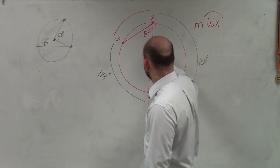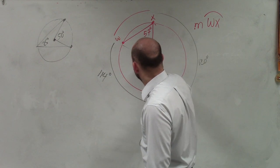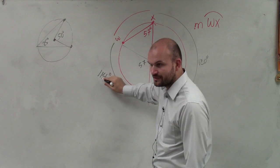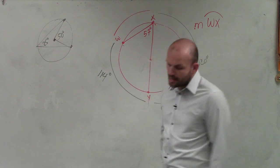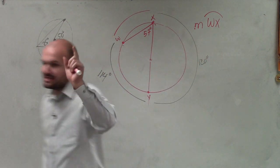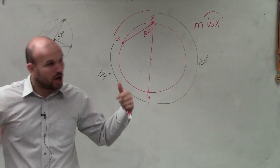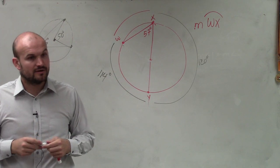So because remember, it's not a central angle, then that would be 57, but it's not a central angle, it's an inscribed angle, so you have to double it. So now we have all the measurements of the sides except for one. And remember, the distance all the way around a circle is 360.